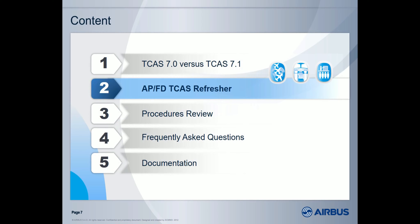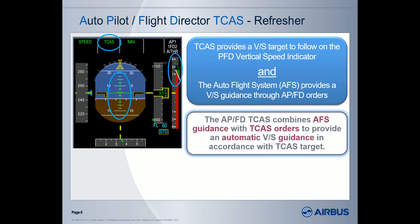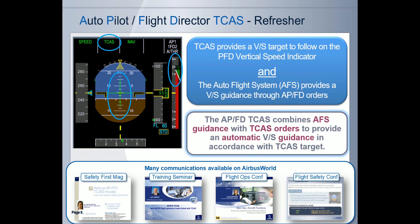Let's now have a look at the APFD-TICAS function. We have developed the APFD-TICAS function in 2010 following in-service experience that showed the need to further enhance the aircraft response to an RA and also the need to reduce crew workload and the stress induced by the TICAS alert. The principle of the APFD-TICAS function is to integrate the TICAS orders within the autoflight in order to provide vertical speed guidance in line with the RA alert. Since 2010, we have presented this function during various flight operations, training, and safety events, and we really encourage you to visit Airbus World if you need more information.